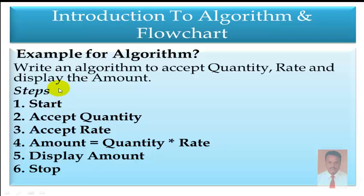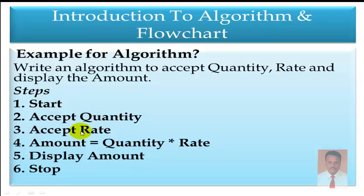Now one more example. Write an algorithm to accept the quantity and rate, and display the amount. Step 1: Start. Step 2: Accept the quantity. Step 3: Accept the rate. Step 4: Amount = Quantity × Rate. Step 5: Display the amount. Step 6: Stop.